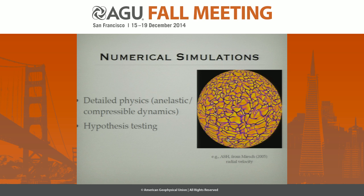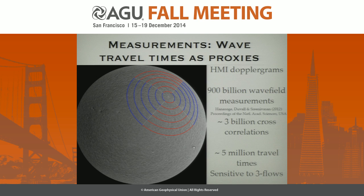I'm actually just a seismologist, so let me tell you what we did. We take data from HMI, the Helioseismic and Magnetic Imager — it's a terabyte a day or something, enormous amounts of data. Every 45 seconds it takes a 16-million-pixel snapshot of the sun. We have near-continuous seismic monitoring in some sense. We used a trillion wave field measurements, lots of analysis, downsampling, huge numbers of cross-correlations, and a large number of wave travel times.